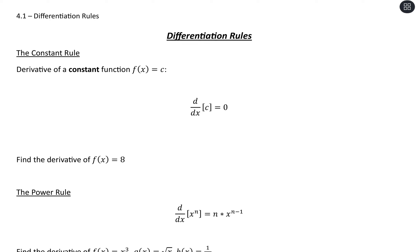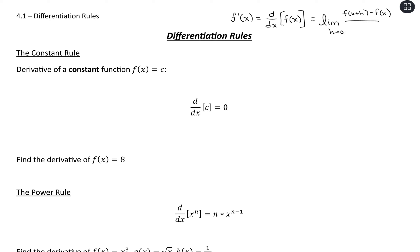So what we've done so far is found the derivative of a function of x using the limit definition or the difference quotient. So if we wanted to take the first derivative of a function f of x, so f prime of x, or we could also write this as d/dx, that would equal taking the limit as h approaches 0 of f(x+h) minus f(x), all over h.